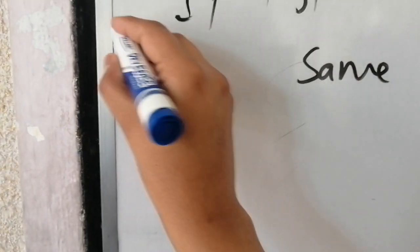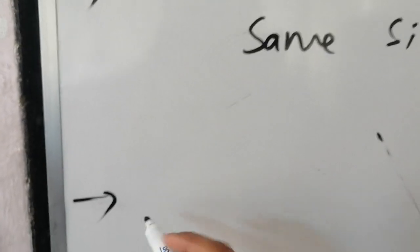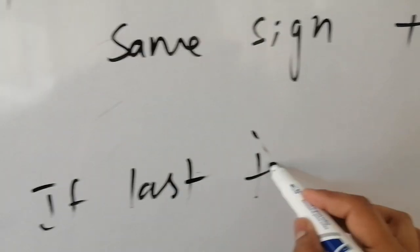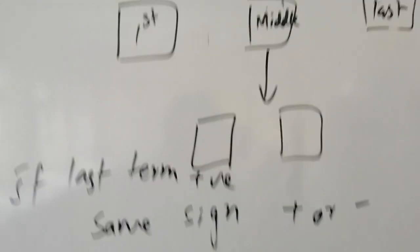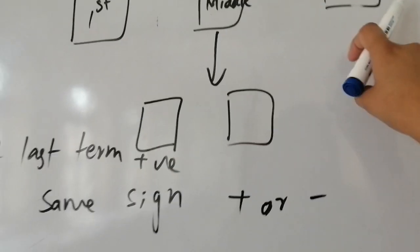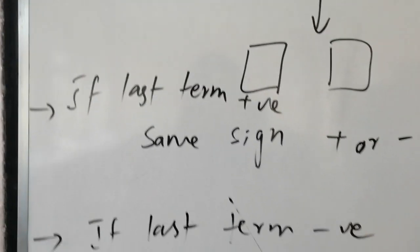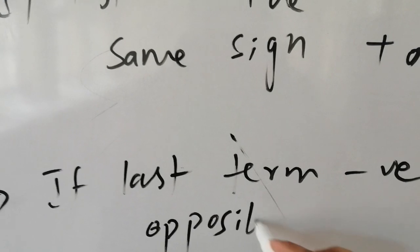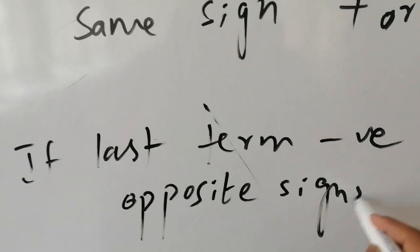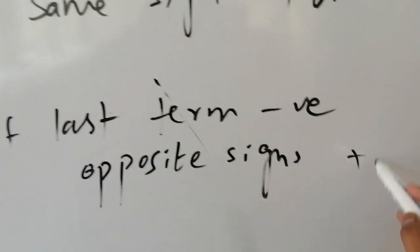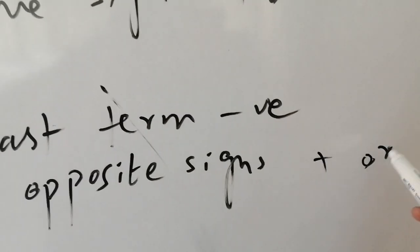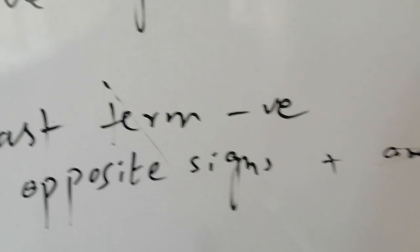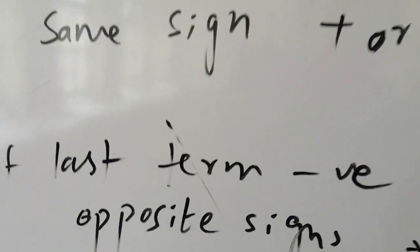The second concept is: if the last term is negative, then the two broken terms will have opposite signs — one will be plus and the other minus.